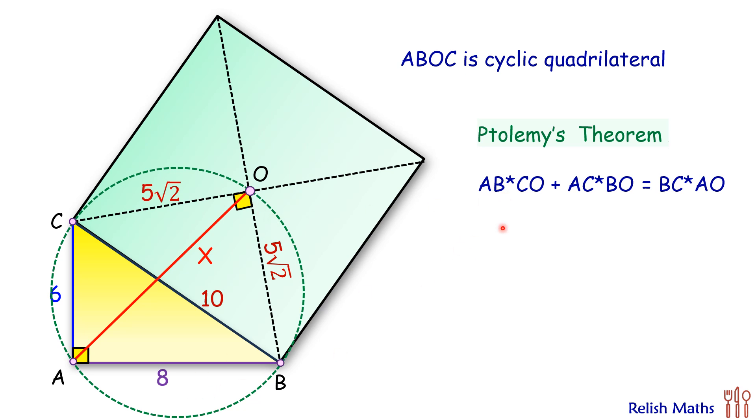Putting the values here, AB is 8 centimeters and CO is 5 root 2, so 8 times 5 root 2. AC is 6 centimeters and OB is 5 root 2. And here BC is 10 and AO is x, that is what we have to find. Simplifying it...